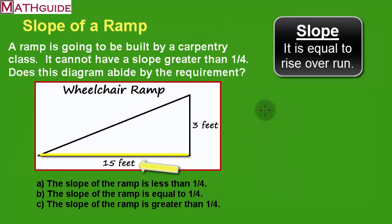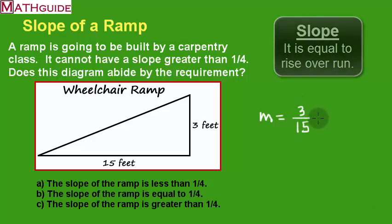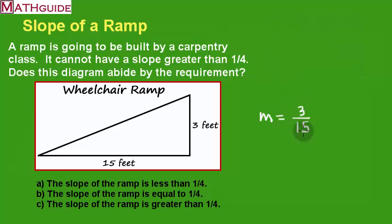All right, so according to slope, slope is equal to rise over run. So it's rise three, run 15. So rise up three, run over 15.